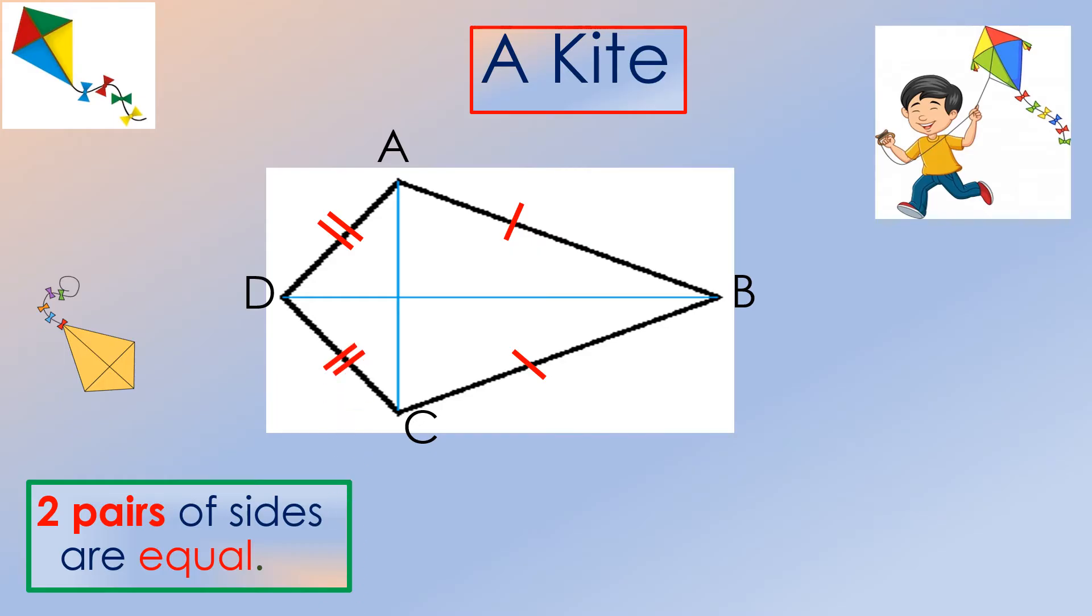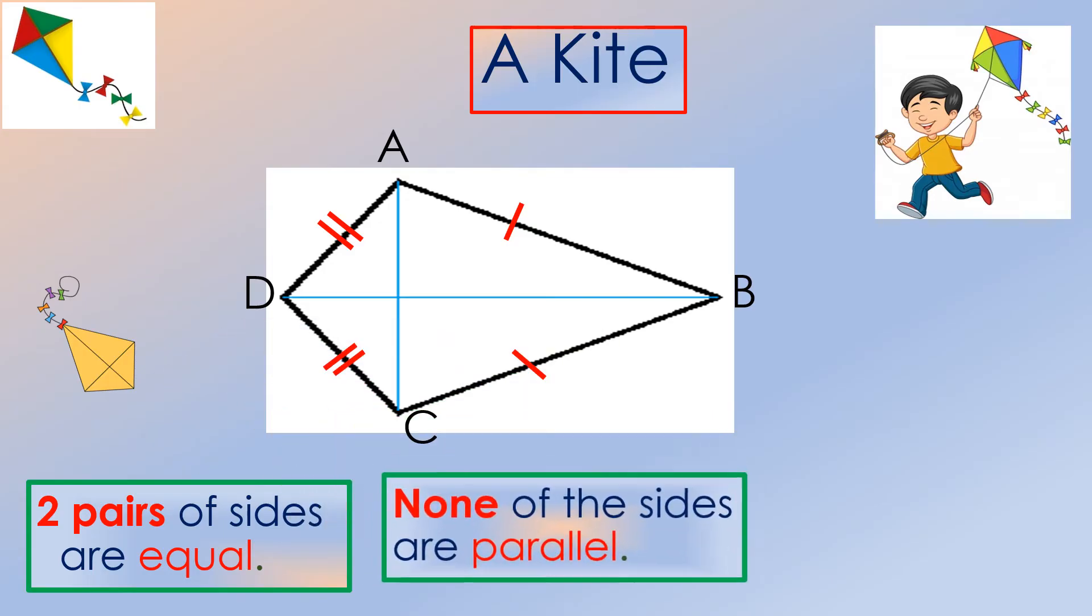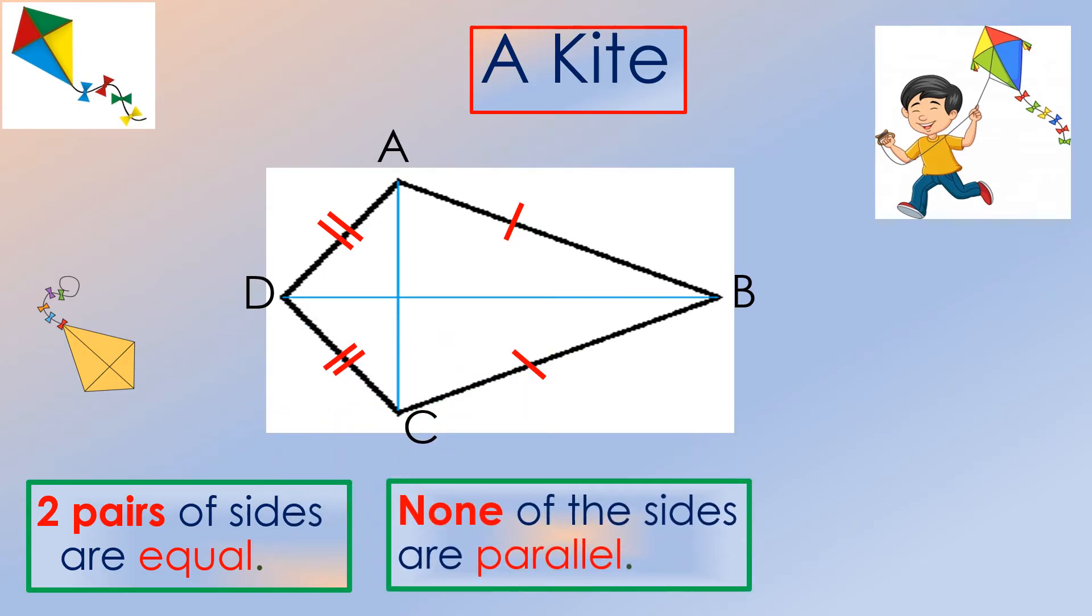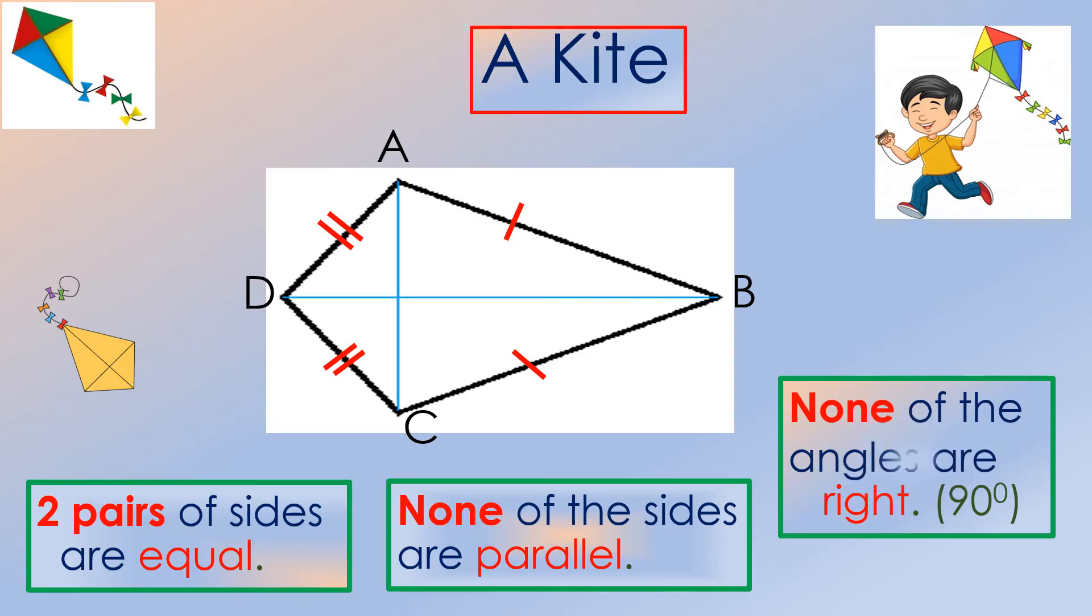These two sides are also equal. However, none of the sides are parallel, and we can't find any right angles either, although one pair of opposite angles is equal, that is, angle A and angle C.